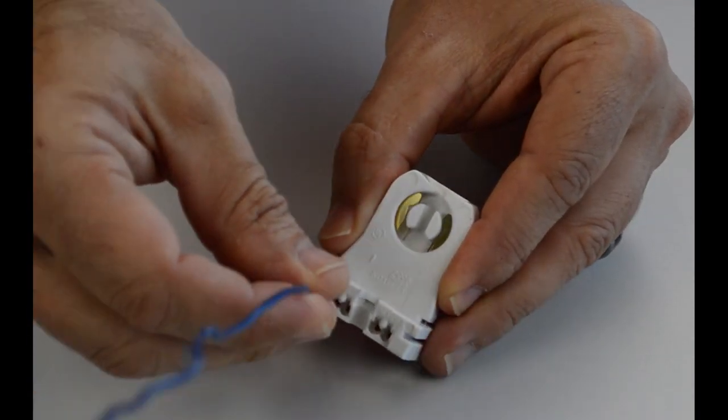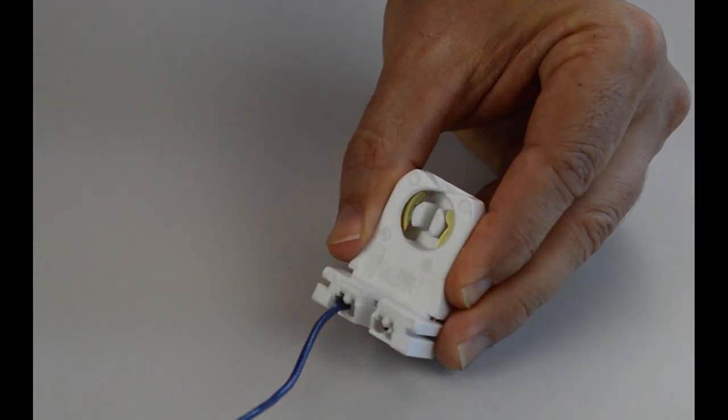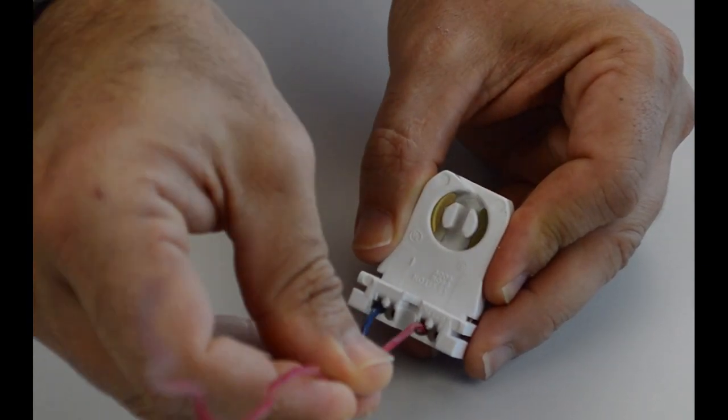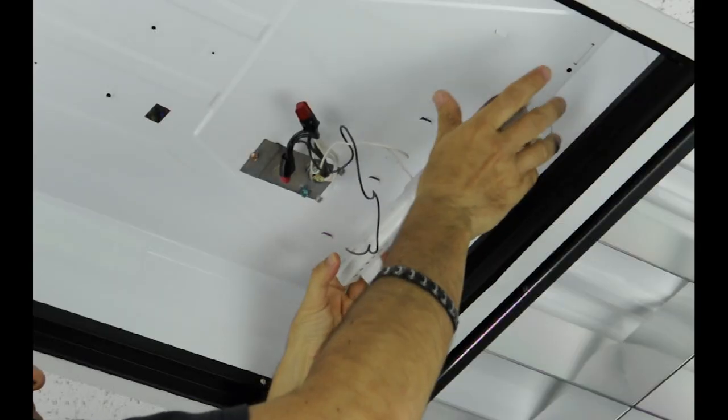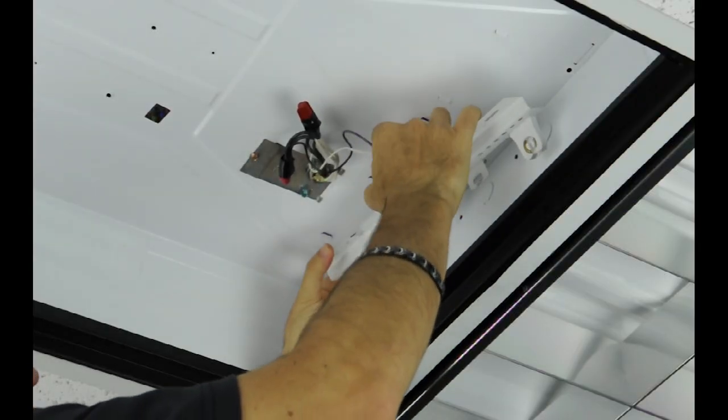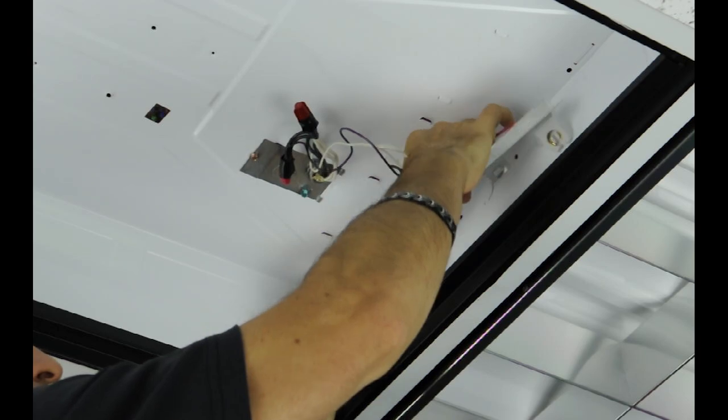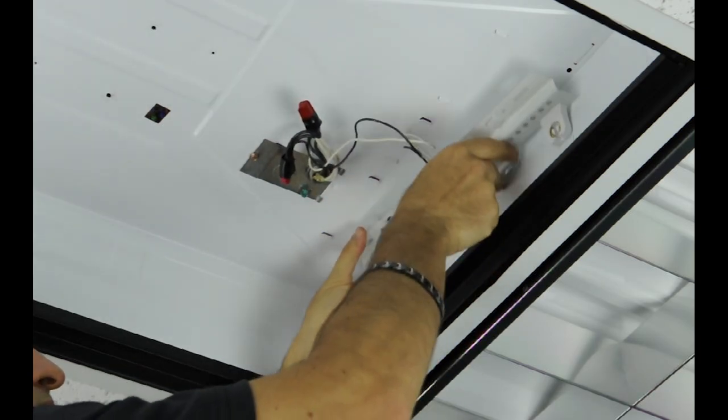Install the wires into the tombstone and install the tombstones on the bracket. Install incoming power supply into the tombstones and install bracket onto the fixture.